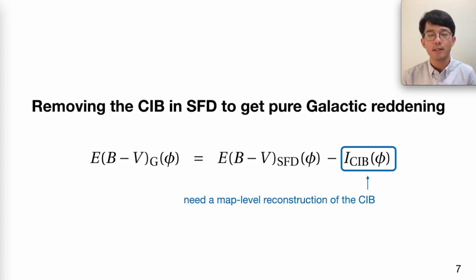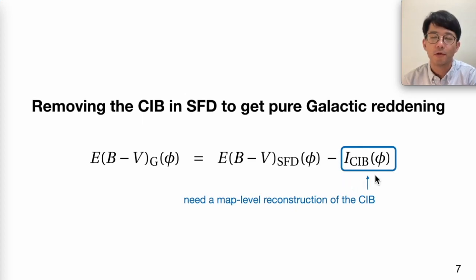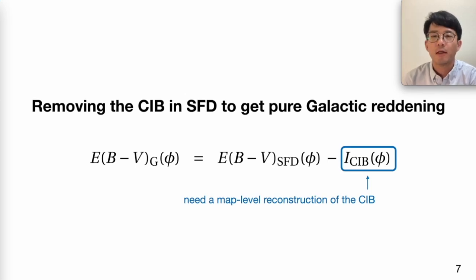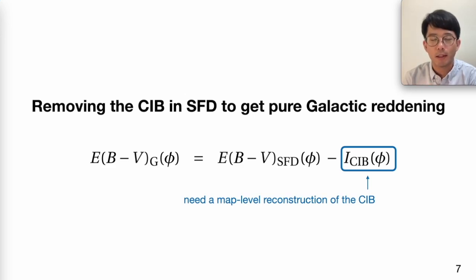I think if we want a once-for-all solution, what we need is a map-level reconstruction of the CIB so that we can subtract it from the original SFD reddening field to get a purely galactic reddening field. If you think about the CIB reconstruction, it's actually a daunting task, because this means we need to know every bright spot of 100-micron emission that is extragalactic rather than galactic. These extragalactic sources are not resolved in the far-infrared data that we have. For people who work on CMB experiments or intensity mapping analysis, you might recognize that this is exactly the component separation problem — in many experiments we wish to split data into different layers along the line of sight. I will show a method that might be applicable to a wide range of component separation.